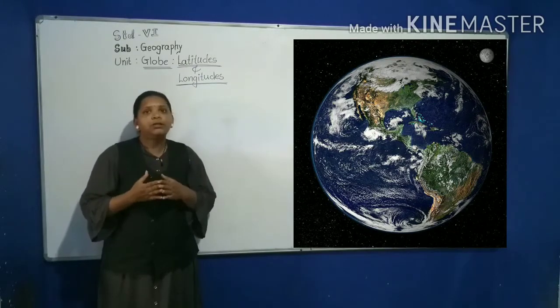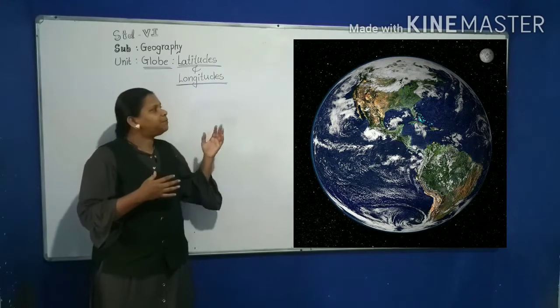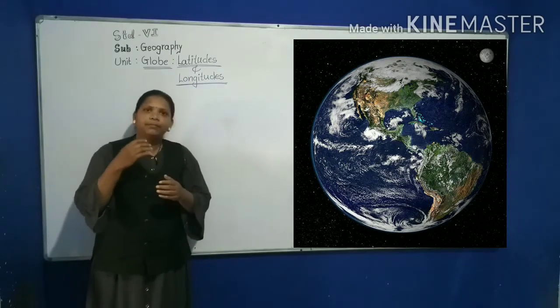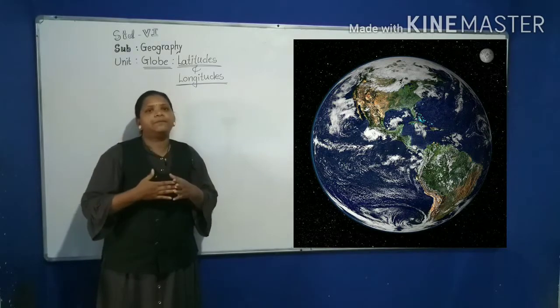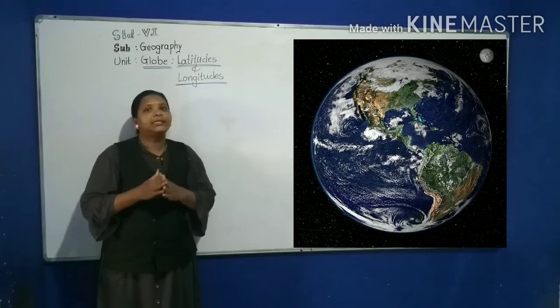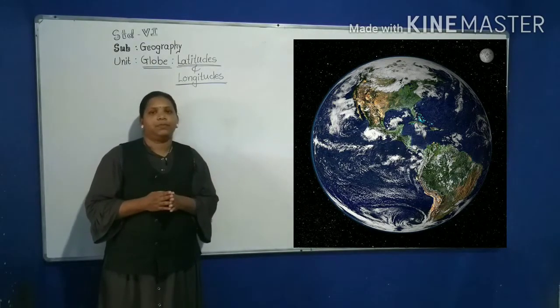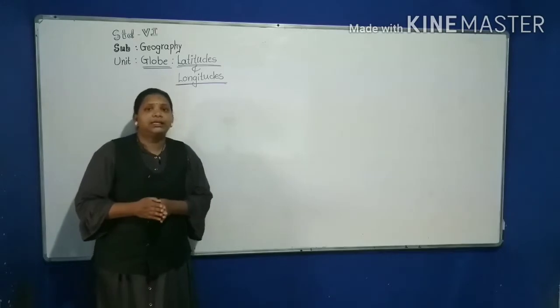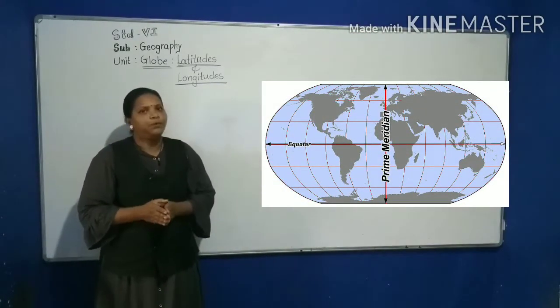The shape of the earth looks like a spherical object. It is proved by the earth's photographs taken from space, but it is not the perfect shape of the earth. It is considered that geoid is the true shape of the earth.